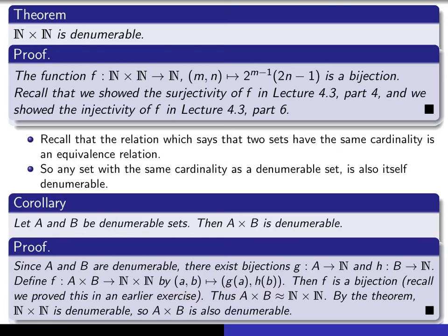So that proves that a cross b and n cross n necessarily have the same cardinality. But since we've proved that n cross n is denumerable up here, it follows that a cross b is also denumerable. And that completes the proof.